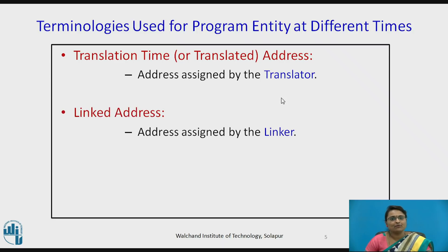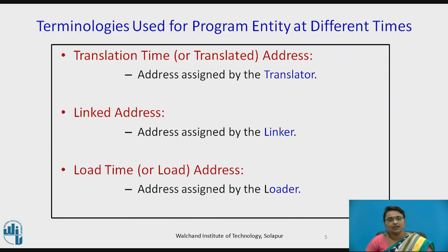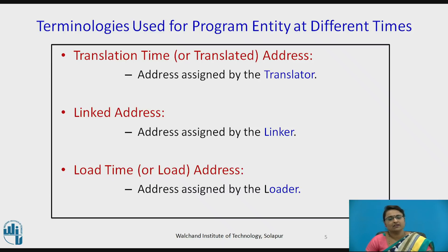That object program is then given as input to the linker, which may change the addresses accordingly. The linked address refers to addresses assigned by the linker, because the linker is linking all the other modules used for execution, so it may change the addresses. Similarly, the load time address is the address assigned by the loader when the program is loaded into memory, and that address may also change.